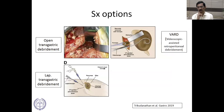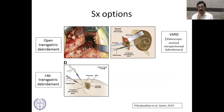Surgical options include minimally invasive approaches such as videoscopic-assisted retroperitoneal debridement, where through the tract of a CT-guided drain, a videoscope and forceps are used to debride. Laparoscopic or open transgastric debridement involves entering the stomach and targeting the posterior wall to access the collection and debride.